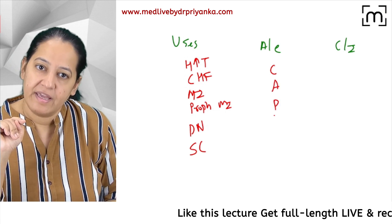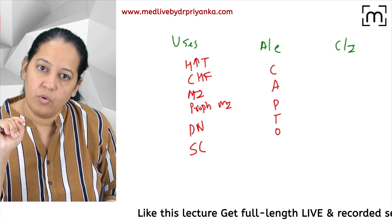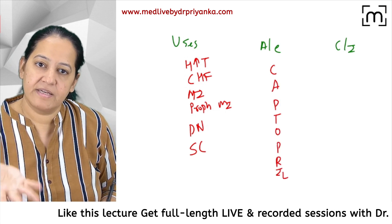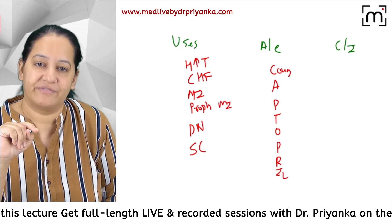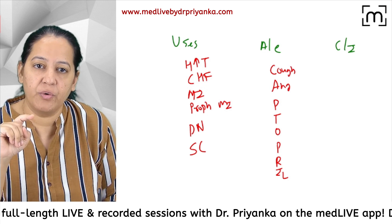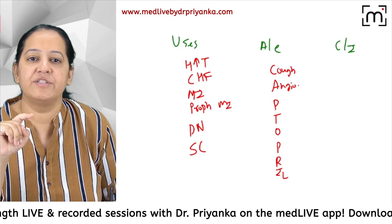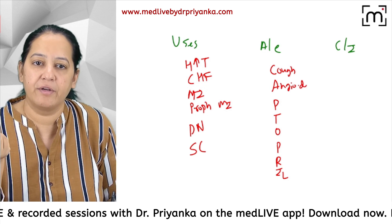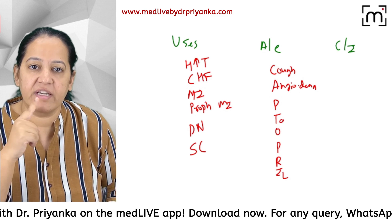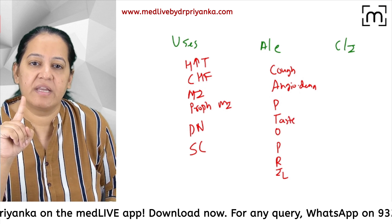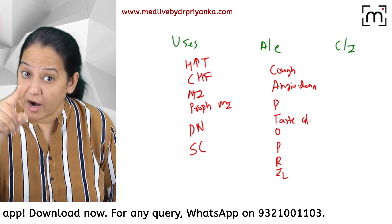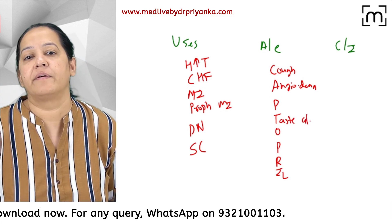The adverse effects are remembered by the mnemonic CAPTOPRIL. C is for Cough, A is for Angioedema, T is for Taste alteration — that is dysgeusia. These three are due to bradykinin.